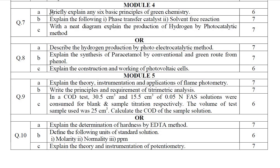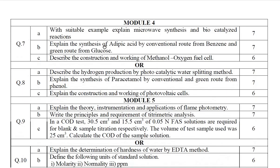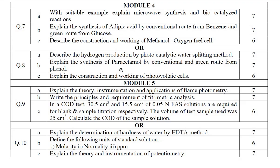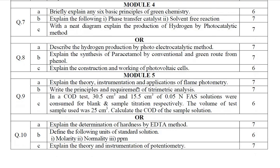Moving on to the last module — Module 5 from Paper 1 and Paper 2. Module 5 contains Water Chemistry, Chemical Analysis, and Instrumental Methods of Analysis. One compulsory problem will be there from this module. Question numbers 9 and 10 are of Module 5, from both Set 1 and Set 2. Here, Question 9C is a problem, so definitely one problem is compulsory.